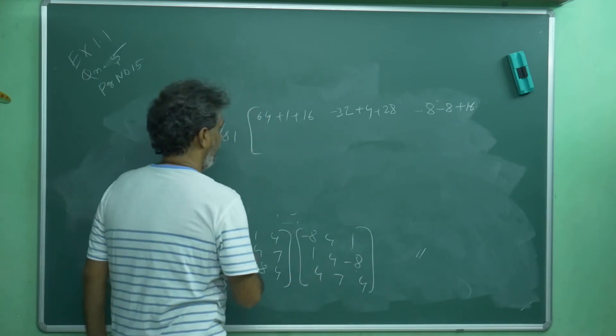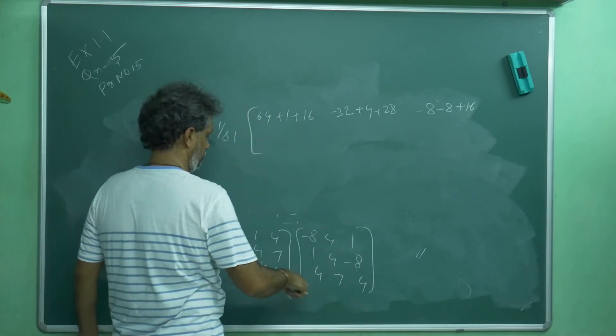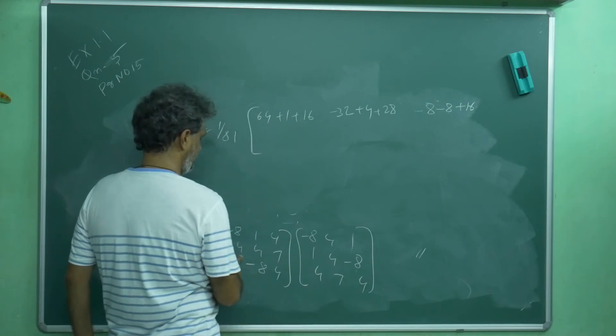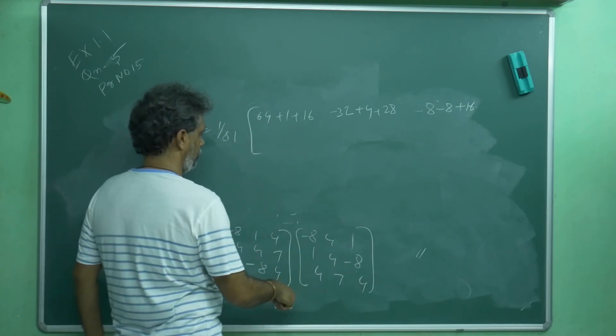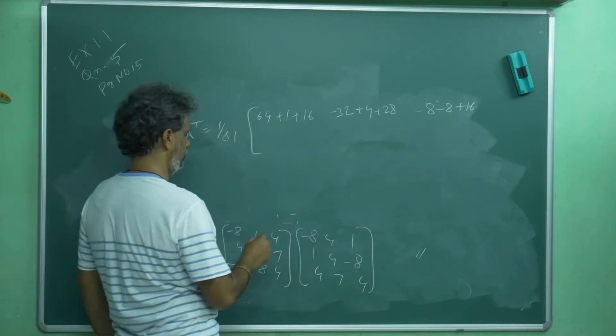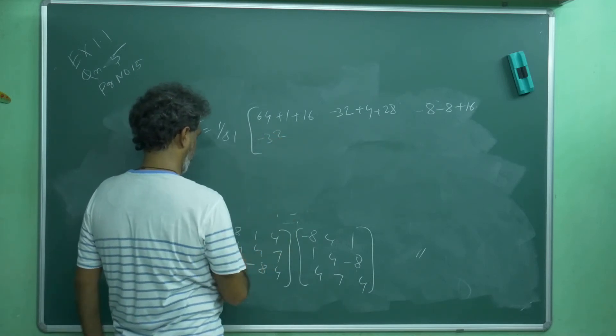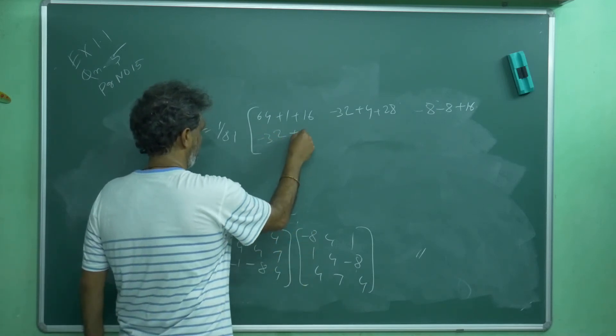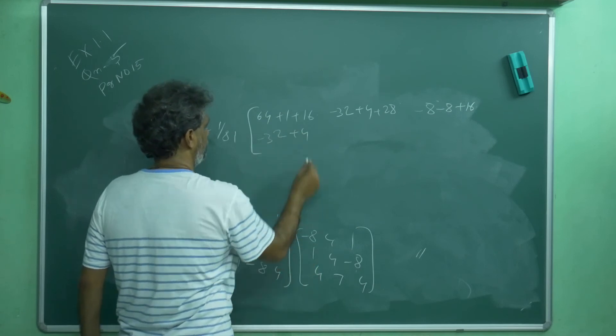This is first row, first column. First row, second column. First row, third column. Take second row. Second row, first column settles in second row, first column. This is minus 32 plus 4 plus 28.